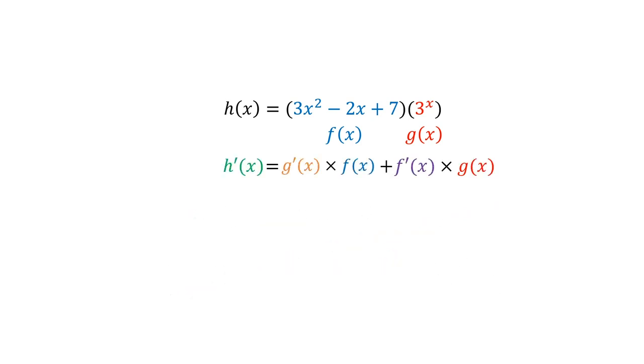Instead, to compute the derivative of h, you would multiply the derivative of g by f, and then add to that the derivative of f multiplied by g. The question now is, why does the product rule work? Why do you need to use the product rule instead of just doing what seems intuitive?